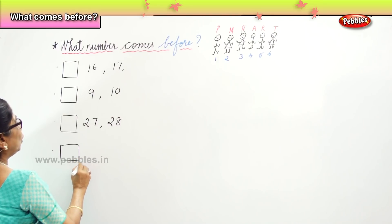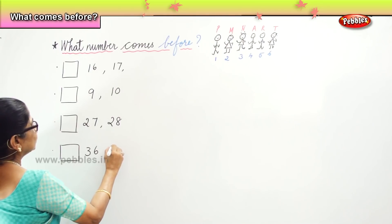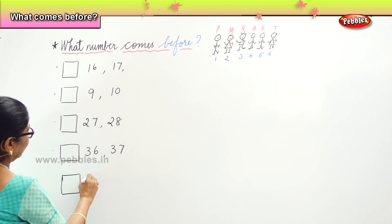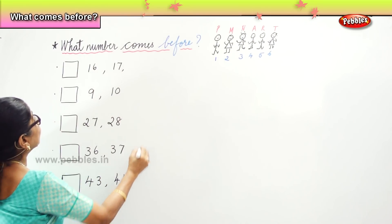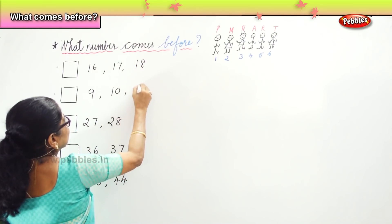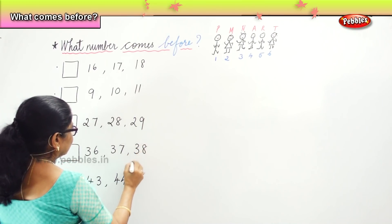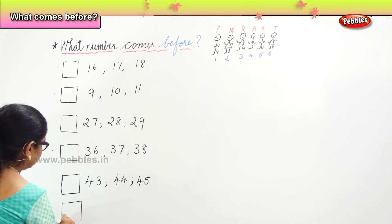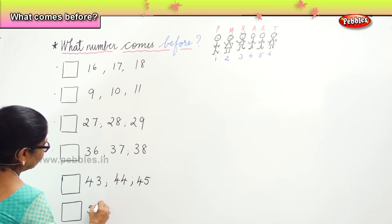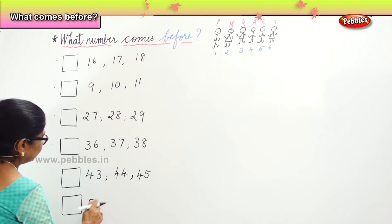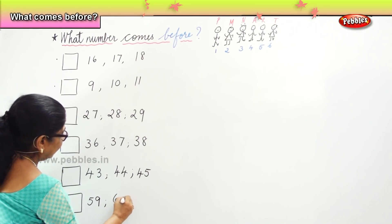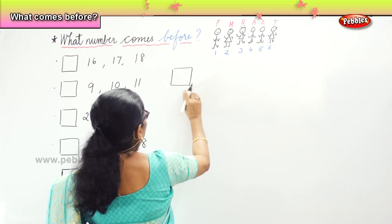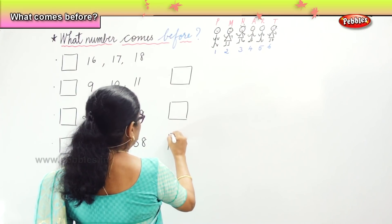What number comes before? 37. You are going to fill in. Next: 43, 44. One more: 56. 59, 60, 61. And we will do some more exercises. You have done numerals 1 to 100, so we can do a lot of exercises — what number comes before?